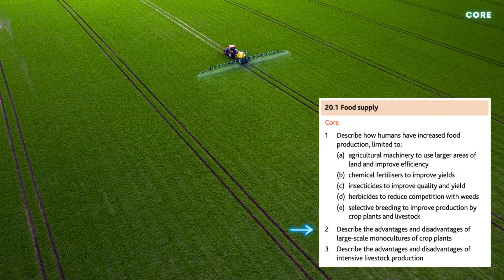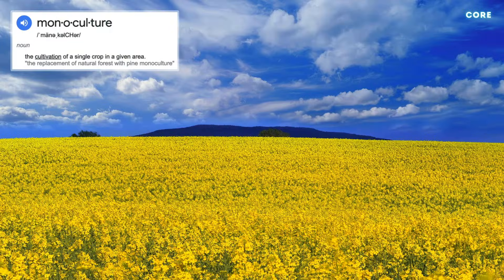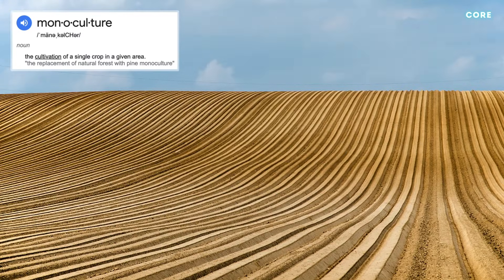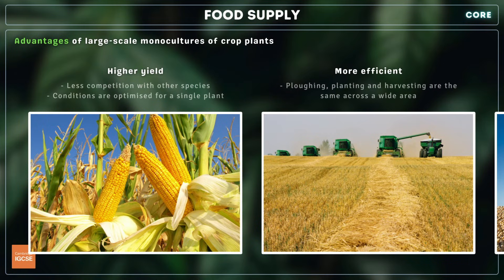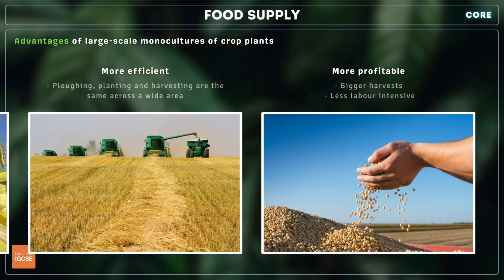Next, you need to describe the advantages and disadvantages of large-scale monocultures of crop plants. Monoculture is the cultivation of a single crop in a given area. All competitors of the crops are removed and replaced with a dense population of only one species. This type of farming increases crop yield and can be managed more efficiently with agricultural machinery. It's also more profitable for farmers as more crops can be grown on less land.